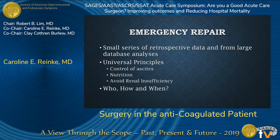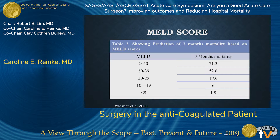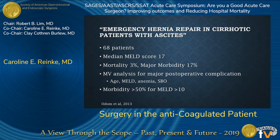There are always the universal principles: controlling ascites, improving nutrition, and avoiding renal insufficiency as much as possible in a non-elective situation. The question is: who, how, and when are we repairing these patients? This table shows the three-month mortality rate of patients with cirrhosis by MELD score, irrespective of having an umbilical hernia. Once you're getting above a MELD score of 20, the three-month mortality is pretty high for these patients.